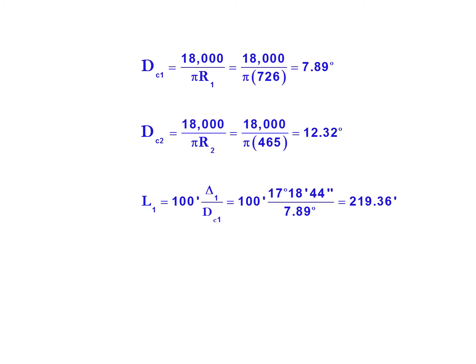Now we can solve for the lengths. L1 is 100 times 17 degrees, 18 minutes, 44 seconds divided by 7.89 degrees, giving us an L1 of 219.36 feet. L2 is 100 times 10 degrees, 14 minutes, 28 seconds divided by 12.32 degrees, giving us a length of 83.11 feet.